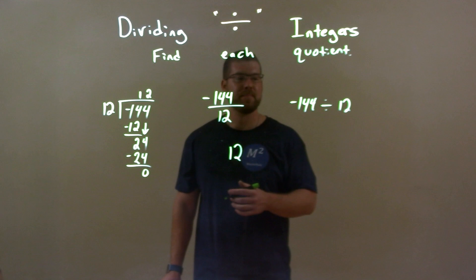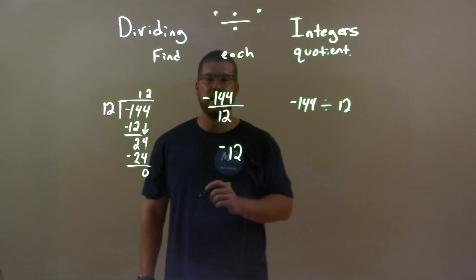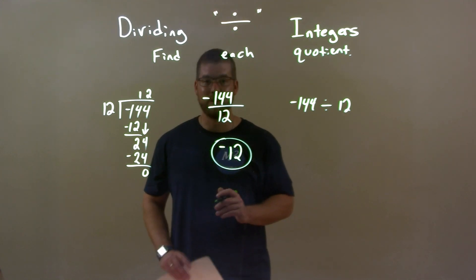Forgot the negatives, right? So a negative divided by a positive is always going to be a negative. So our final answer is just a negative 12.